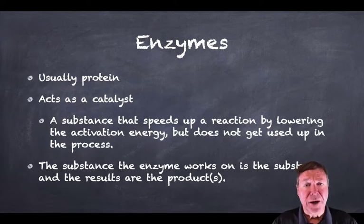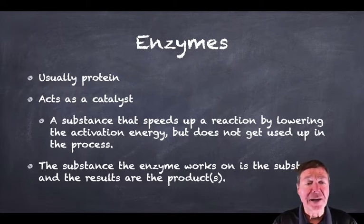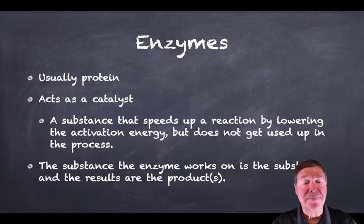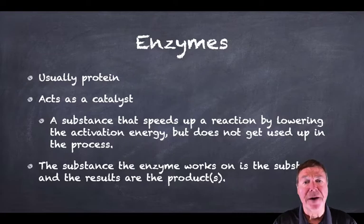First of all, and I'm going to cover each one of these in depth. Enzymes are usually a protein. They act as a catalyst. A catalyst is a substance that speeds up a reaction by lowering the activation energy but does not get used up in the process. And the substance that the enzyme works on is called the substrate, the results are the products. Let's dive deeper in each of those.